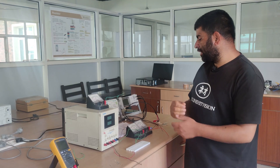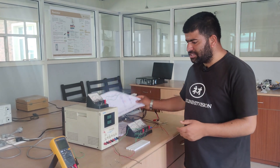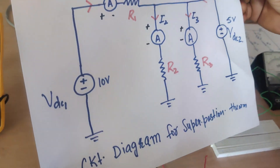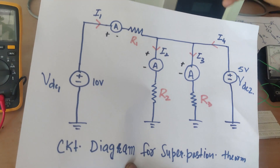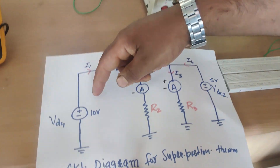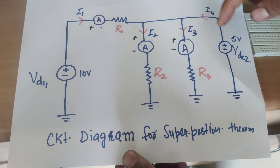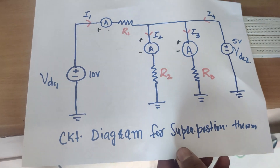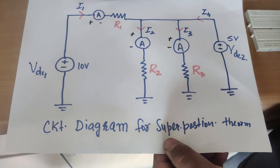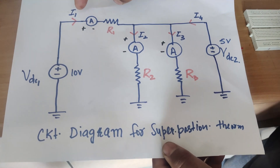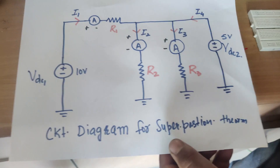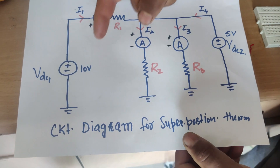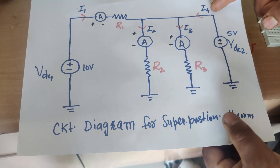To demonstrate the Superposition Theorem, we have chosen a very simple circuit — a two-source circuit with two voltage sources (a 10-volt source and a 5-volt source) and three resistances: R1, R2, and R3. We will measure currents i1, i2, and i3. First, we take only source VDC1 (10 volts) and replace the 5-volt DC source by its internal impedance, that is, a short circuit.